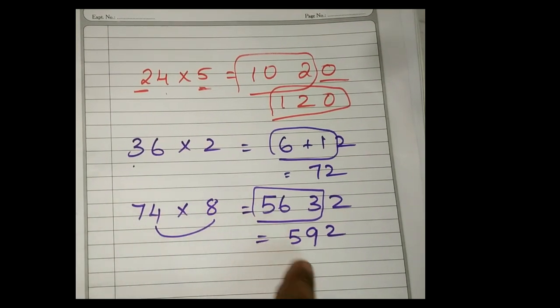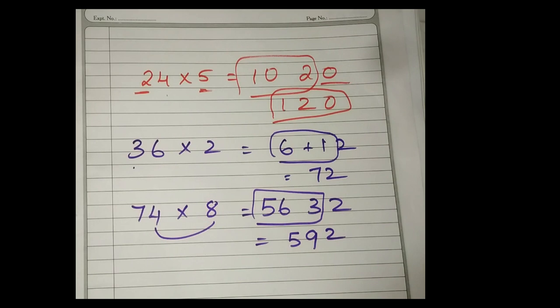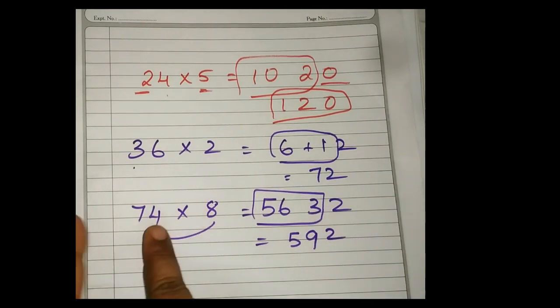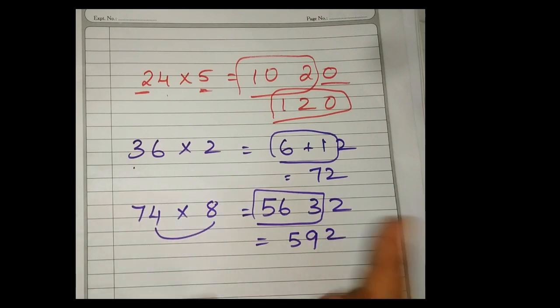So this is the way in your mind you should separate it: 8 sevens are 56, so 56 plus 3, it is 59, then at last you should add with the 2. Many will forget the ones place. It is okay, no problem. First calculate the tens place, then you can add the ones place. So really this will be helpful. You can try to write, children. Now it is your turn.